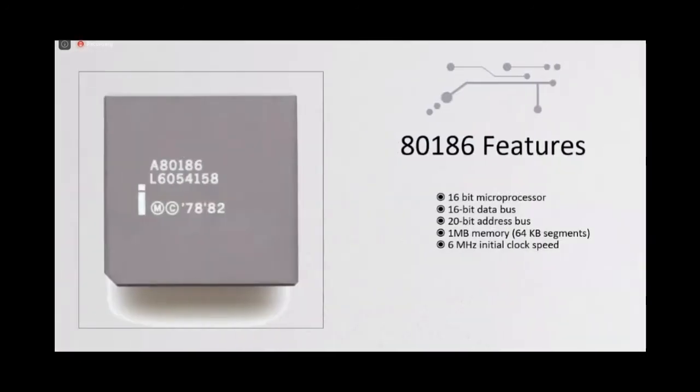So, 80186 was the enhanced version of Intel 8086. Therefore, it inherits all the basic features of 8086. For example, it is a 16-bit microprocessor, 20-bit address bus, 16-bit data bus and has 1 megabyte of memory. But it has a 6 megahertz initial clock speed while 8086 had 5 megahertz.